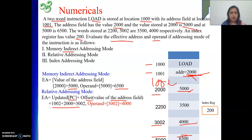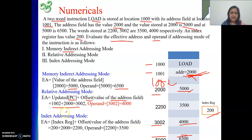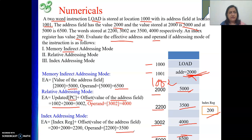Next is index addressing mode. In this case we look at the index register, whose content is 200. We add the offset, which is the value of the address field: 200 plus 2000 equals 2200. The effective address is 2200, and the operand at that address is 3500. This completes the answer for all three modes — memory indirect, relative, and index.